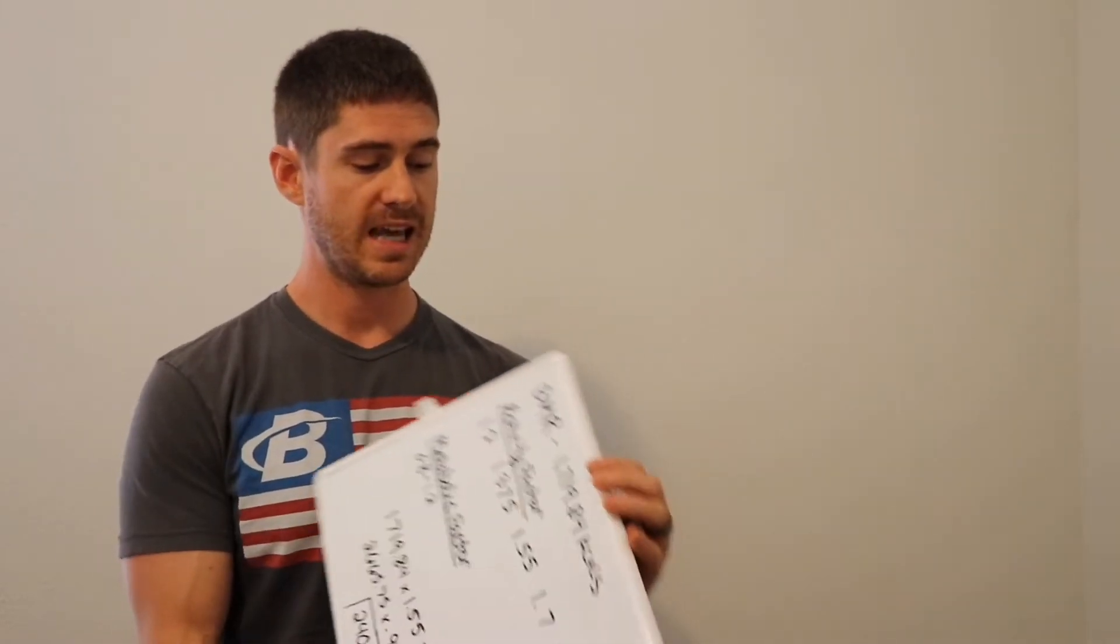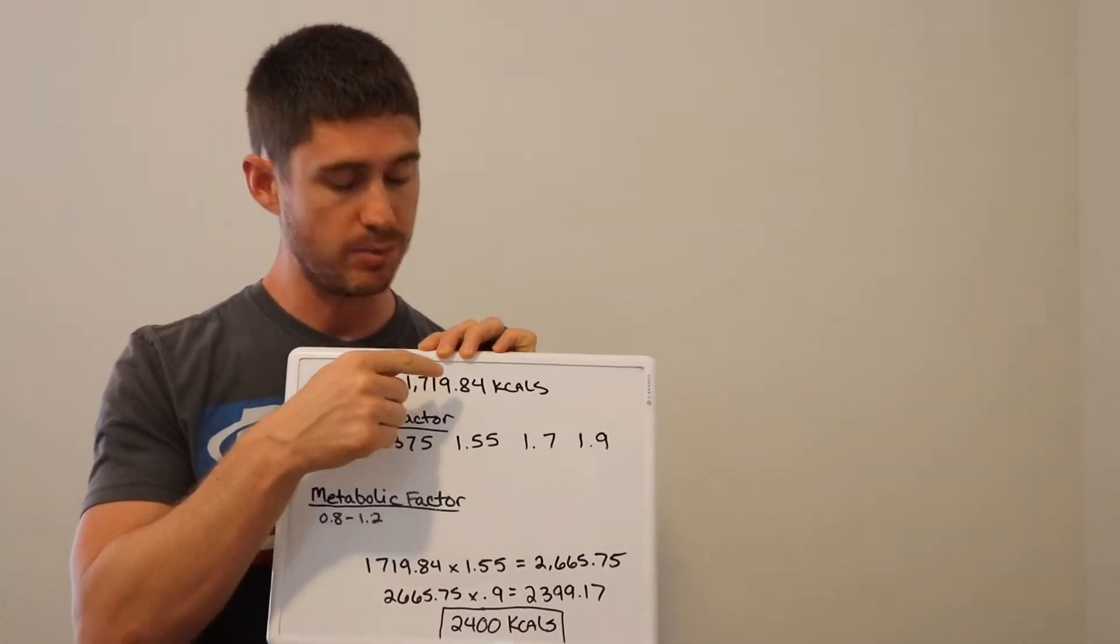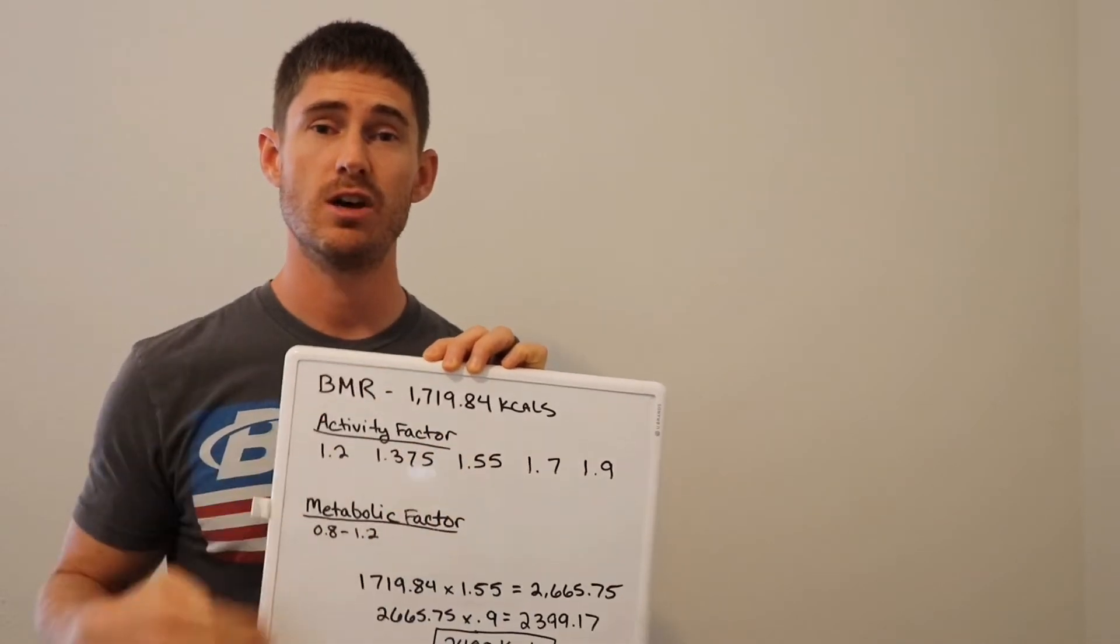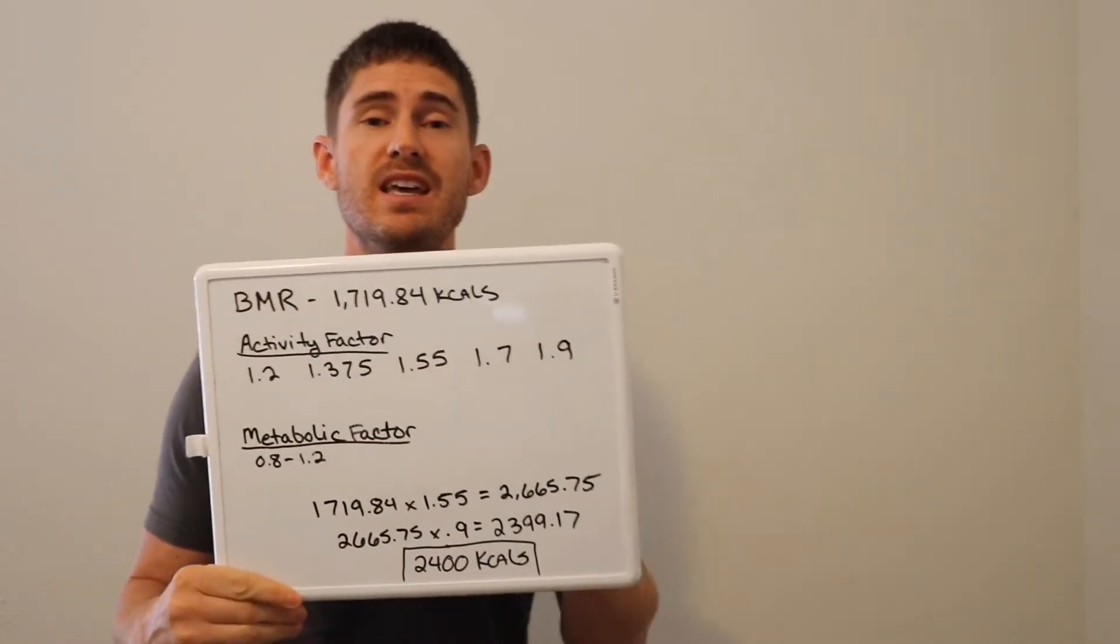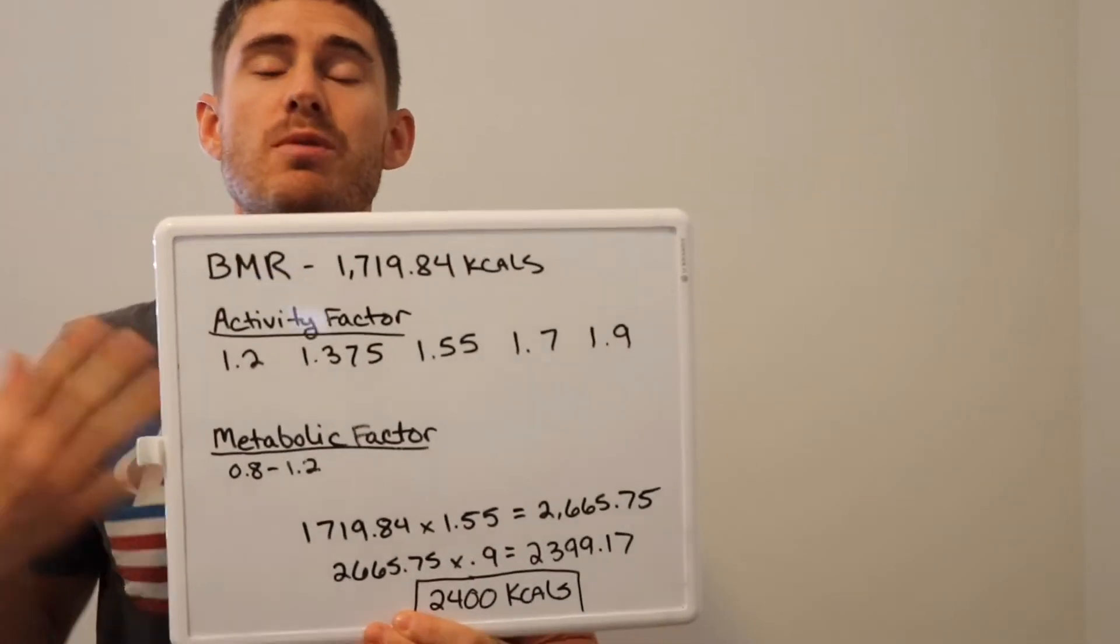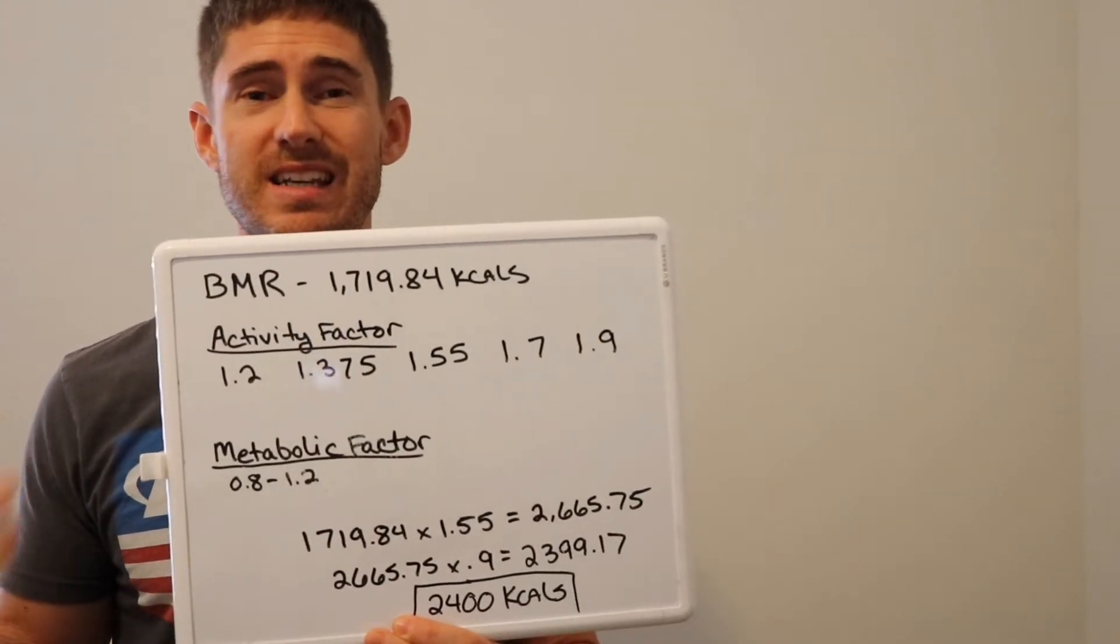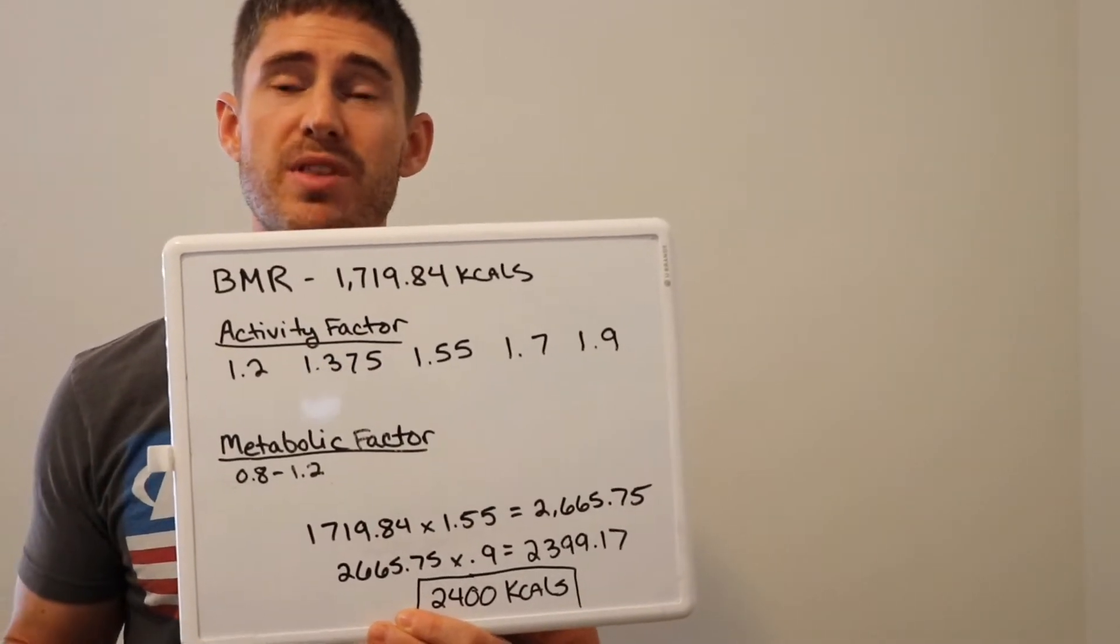In that example, we used me, a 34-year-old male with 145 pounds of lean body mass and about 15 pounds of fat mass converted into kilograms for the equation. That came out to a BMR of 1719.84 calories, which is what we use in order to just survive. That's what my body needs calorie-wise to keep my organs running, to keep my heart pumping, things like that.